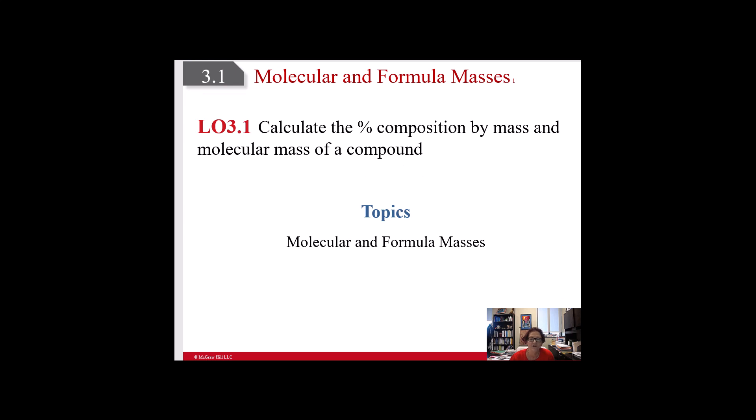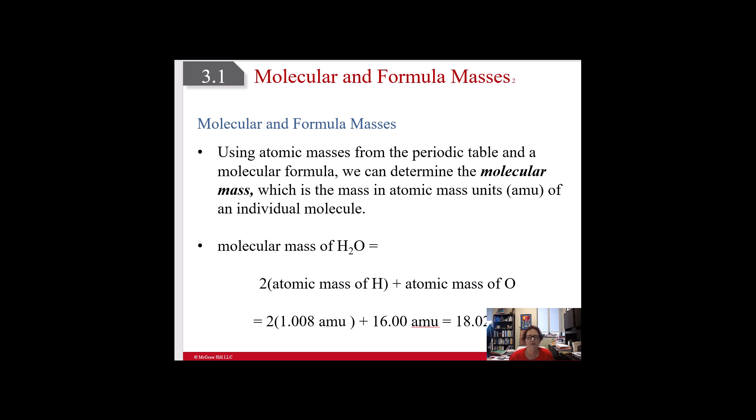This first topic we're going to look at is calculating molecular and formula masses. Remember, a molecule is a covalent compound. An ionic compound is going to be due to a formula, so there are formula masses and molecular masses. Using the atomic masses from the periodic table, that's the one with all the decimal places, we can determine the molecular mass, which is the mass in AMUs, atomic mass units, of an individual molecule. We did this for atoms, the individual elements. Now we're going to do it for molecules, and it's a super simple process.